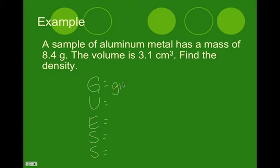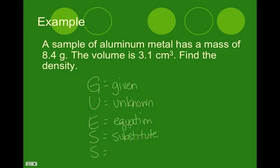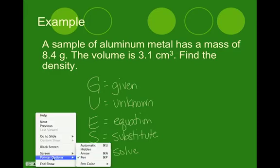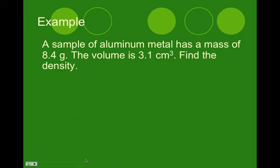G stands for given. Write out what you know. U stands for unknown. Write out what you don't know. E stands for the equation that you will use to solve for the unknown. The first S is substitute. You're given into your equation. And then the last step is solve for your unknown. So this is the method that we're going to use on every math, word, problem-y type of question that we ever have. And this is what it looks like.